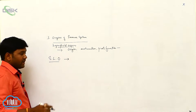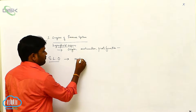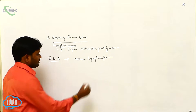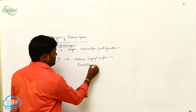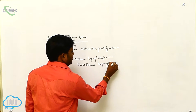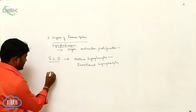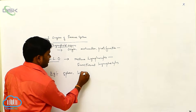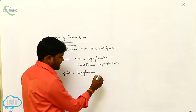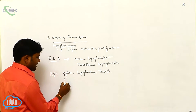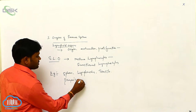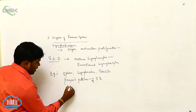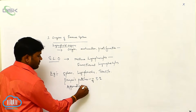The organs where mature lymphocytes are transformed into functional lymphocytes are called secondary lymphoid organs. Examples include the spleen, lymph nodes, tonsils, Peyer's patches of the small intestine, and the appendix of the large intestine.